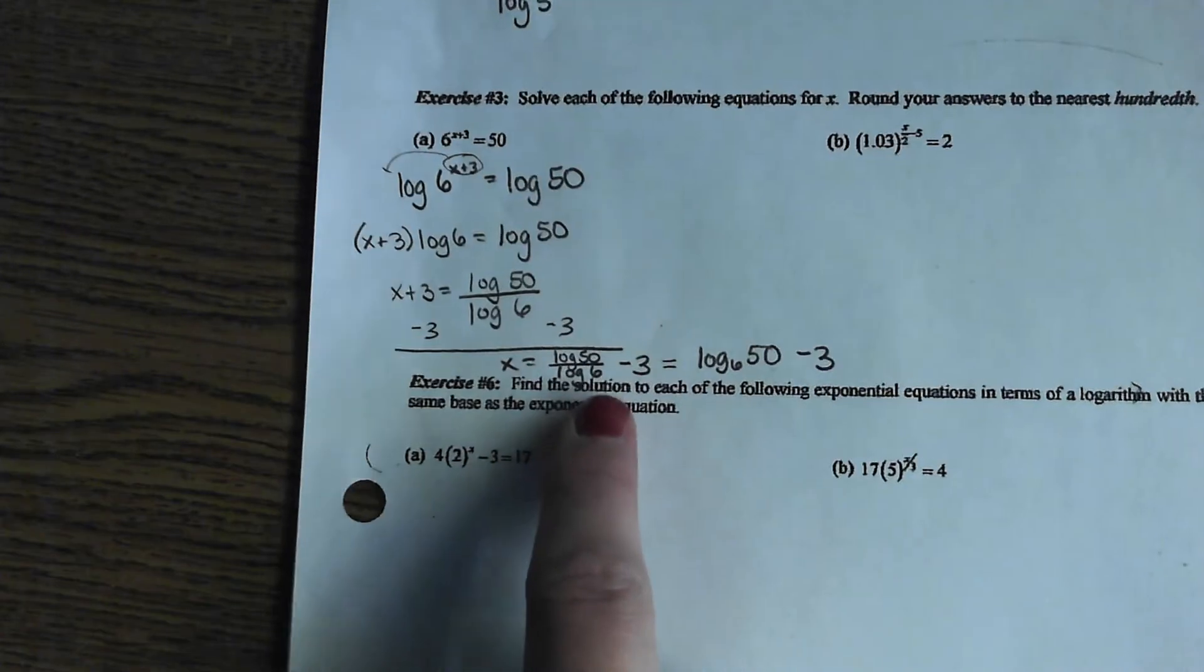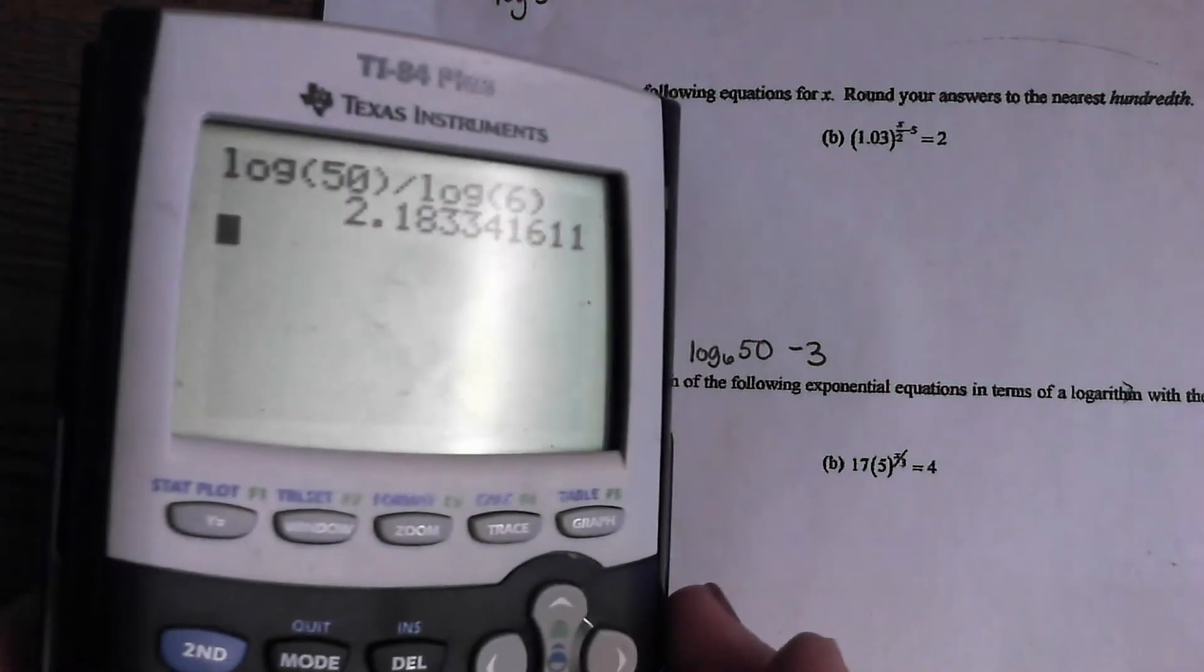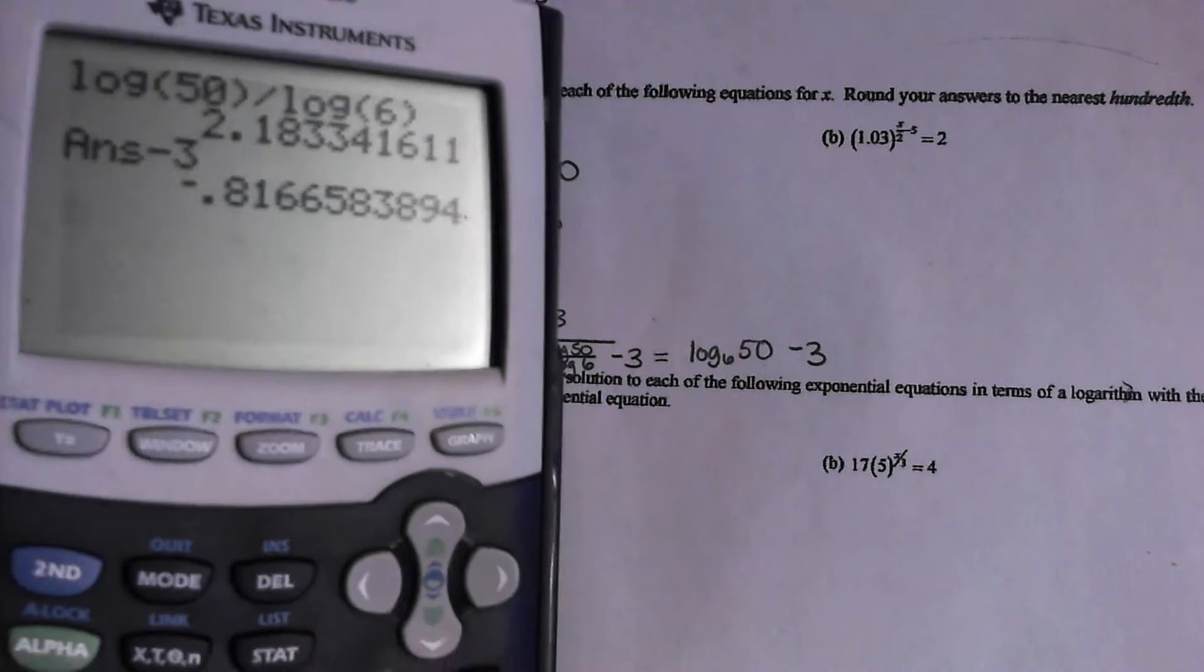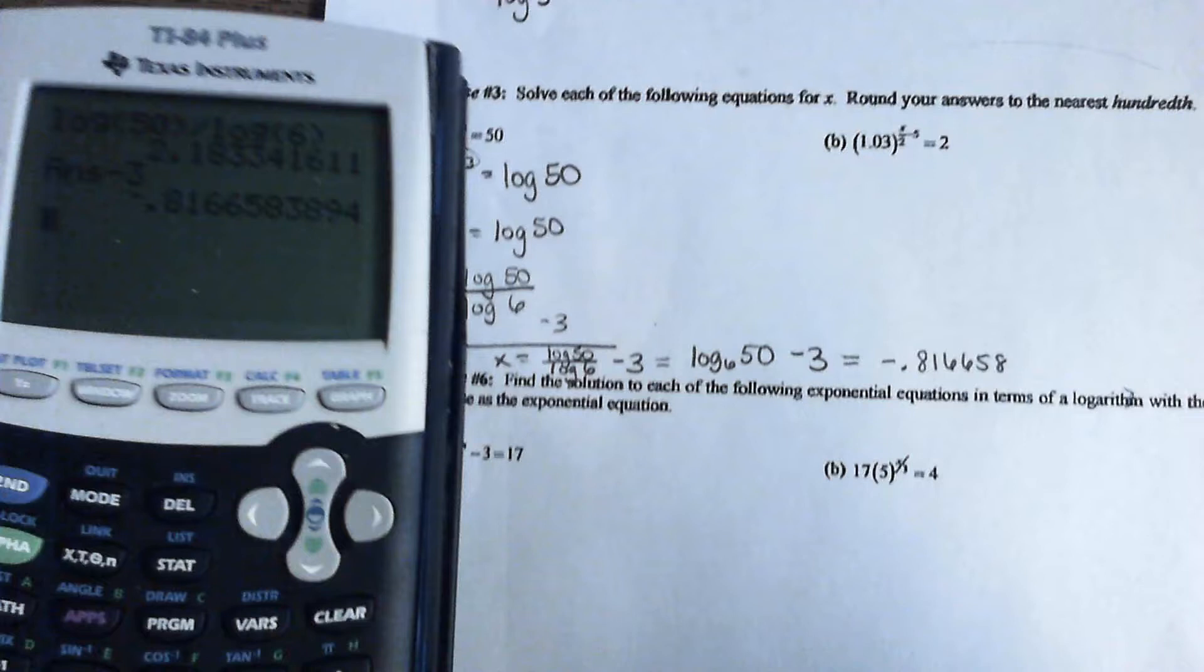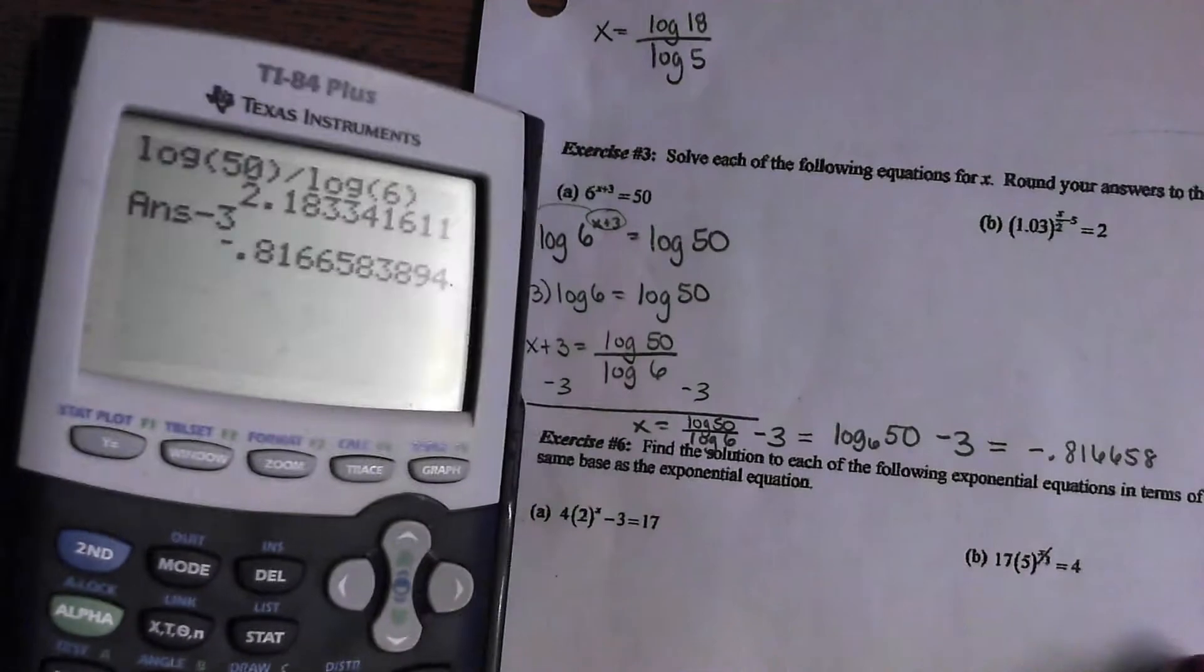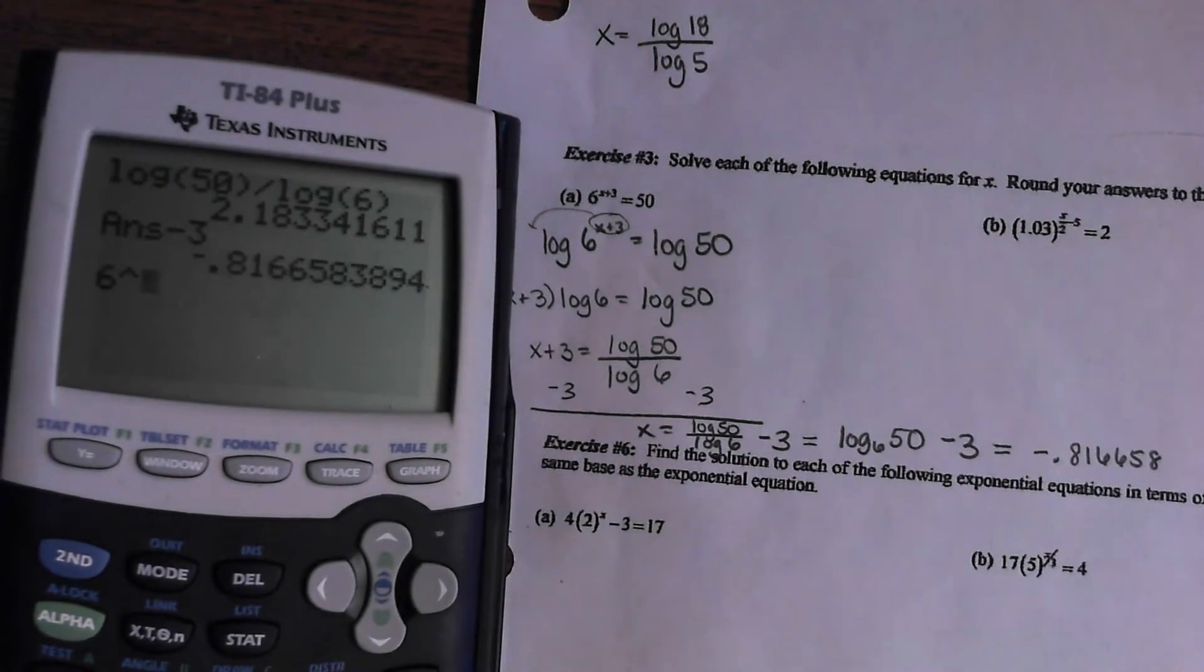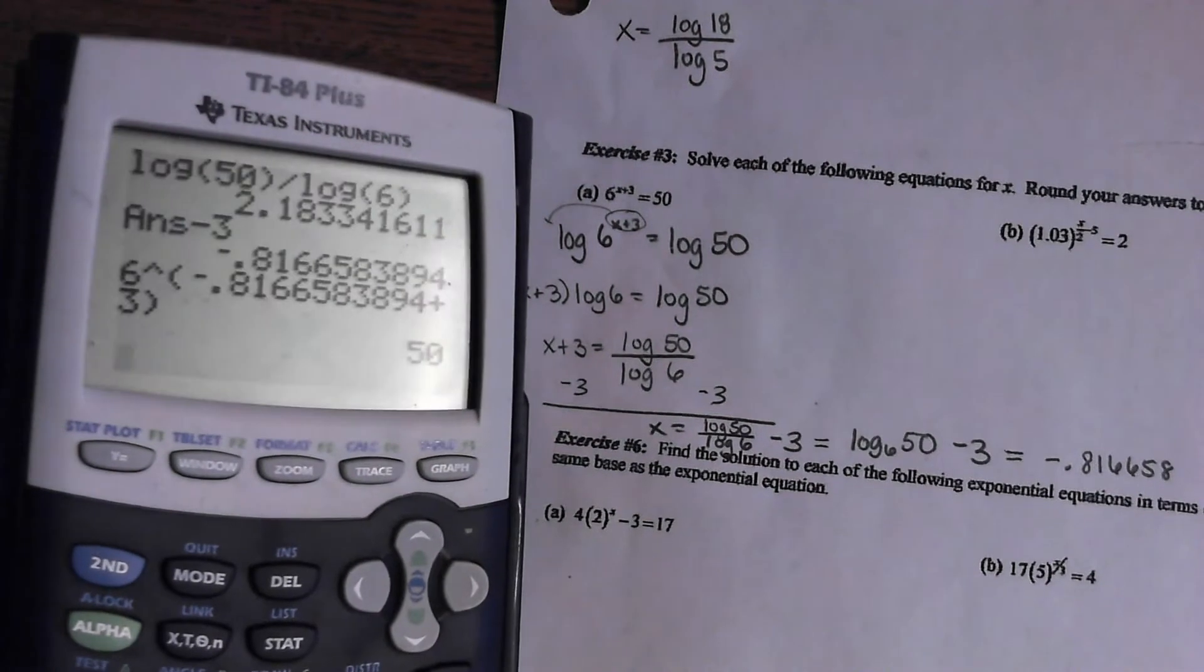Now, most of your calculators are only going to allow this. Log of 50 divided by log of six gives me that. But then I have to subtract three from it. And there's my answer. Negative 0.816658 equals negative 0.816658. And again, if you want to check that, go back up into your original. Six to this crazy number. Well, I should put it in parentheses. This crazy number plus three should give me 50. Good?